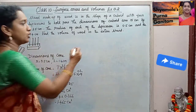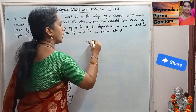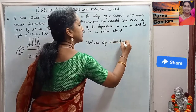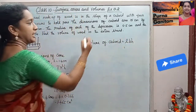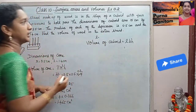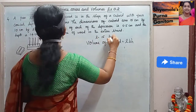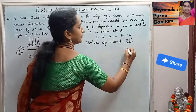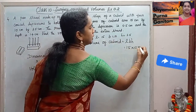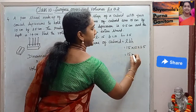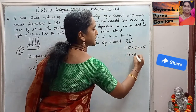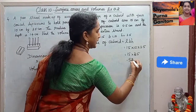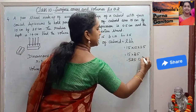Now volume of cuboid. Volume of cuboid is equal to L × B × H. The dimensions of the cuboid are: length 15, breadth 10, and height 3.5. So 15 into 10 into 3.5 — 15 into 35 is 525 — giving 525 cm cube.